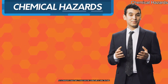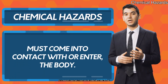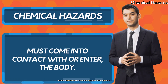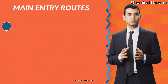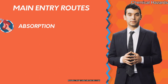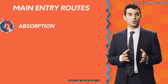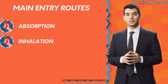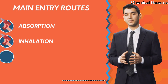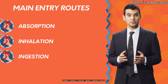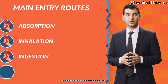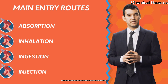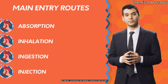For a chemical to cause harm, it must come into contact with, or enter, the body. The main entry routes are absorption, through contact with bare skin or eyes; inhalation, breathing in chemicals; ingestion, swallowing chemicals; and injection, puncturing the skin, allowing a chemical to enter the body.